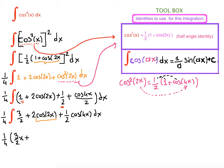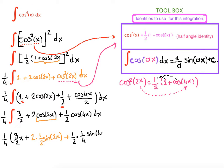You can use this formula: the integral of cosine of ax dx equals one over a times sine of ax plus c. Here our a is 2, so it's going to be one half sine of 2x. Plus, we have one half here already — the antiderivative of cosine of 4x applying the formula again is one fourth times sine of 4x plus c.